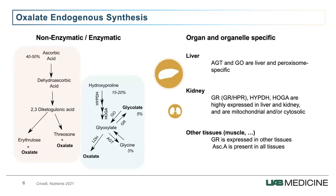The endogenous synthesis of oxalate has two different parts. One is non-enzymatic, mostly the breakdown of ascorbic acid or vitamin C, which generates oxalate. The other part is enzymatic pathways that involve the metabolism of the precursor glyoxalate, which is oxidized to oxalate by lactate dehydrogenase. The precursors to glyoxalate have been identified for quite a while — hydroxyproline, glycolate, glycine, and probably a few we don't know yet. Oxalate synthesis is both organ and organelle specific, with the majority synthesized in the liver.